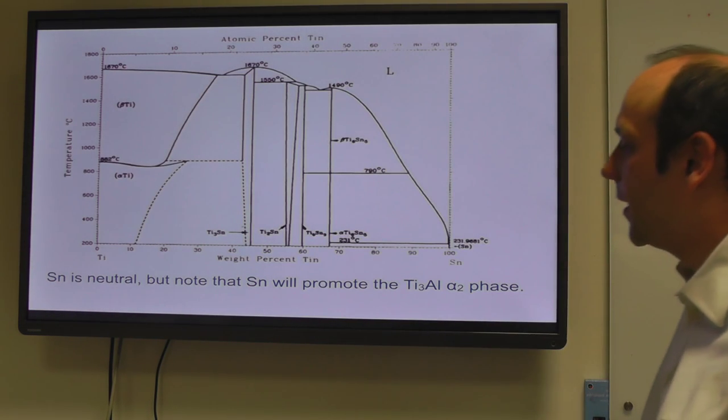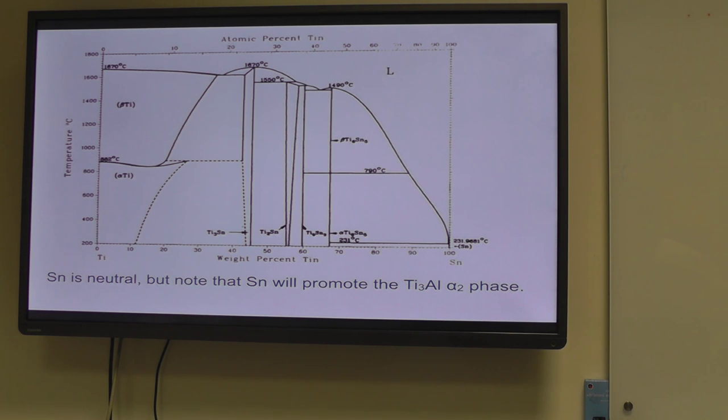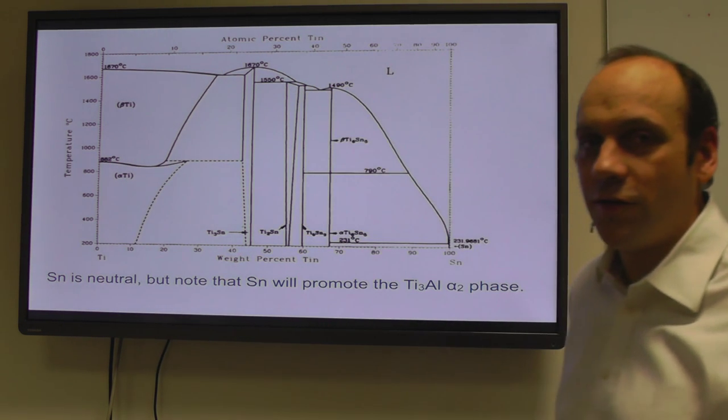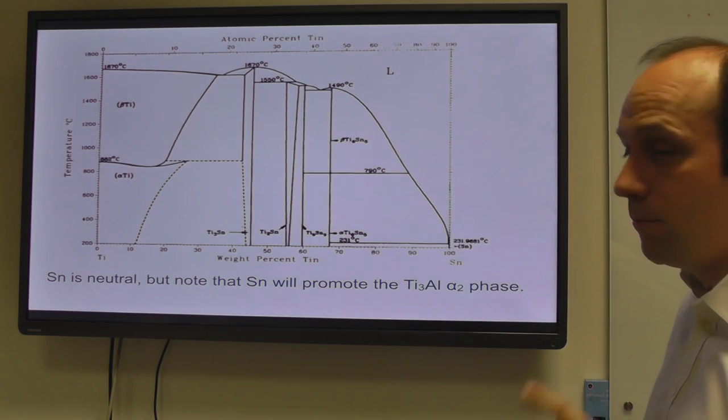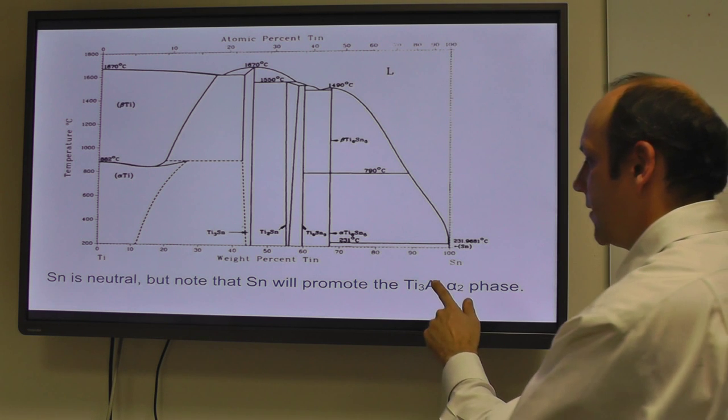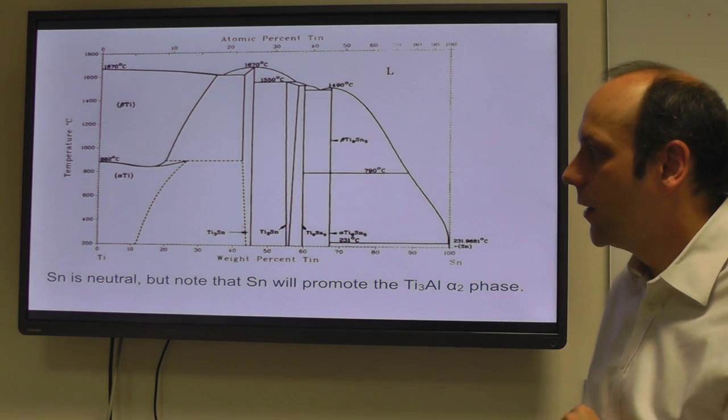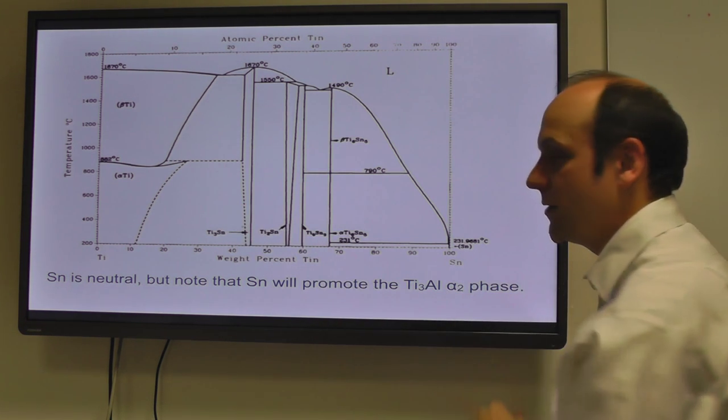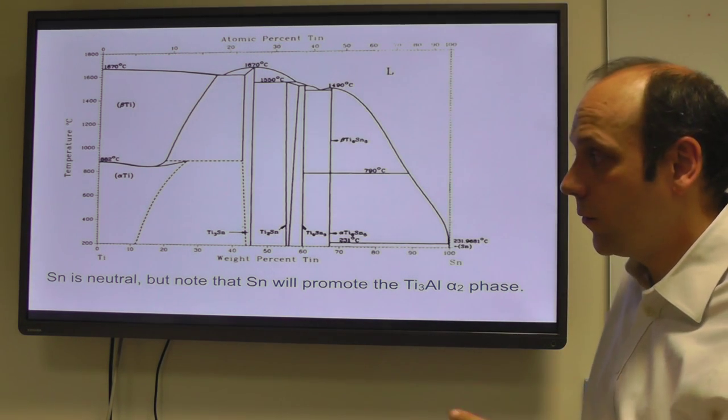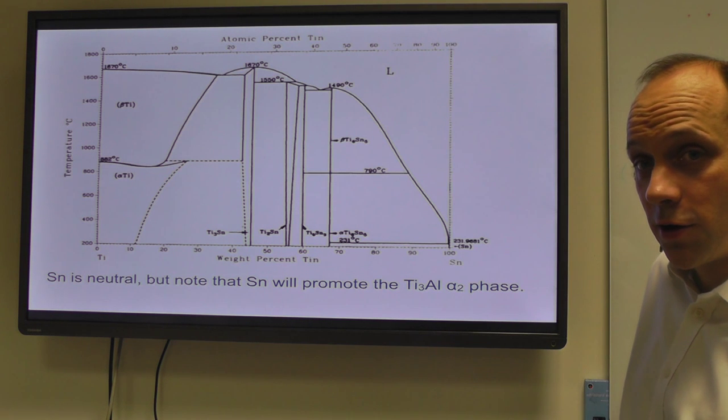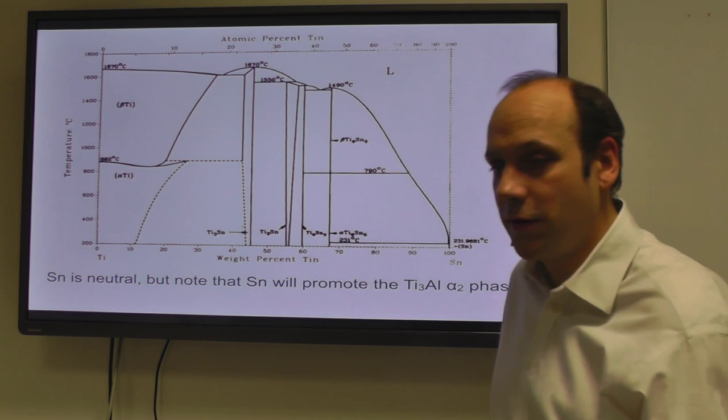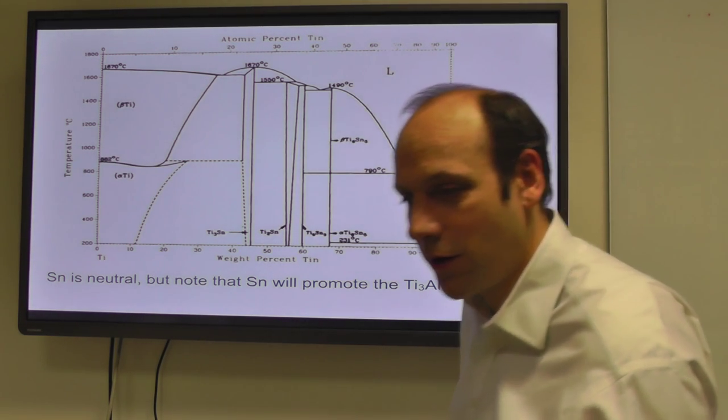Another example here is tin. We said that tin was neutral earlier. That is, it has no effect at small alloying contents on the solvus temperature, the transformation temperature from beta to alpha. But notice that there is a Ti3Sn phase. Tin will tend to go on the aluminum side of the alpha-2 phase. It has the same crystal structure Ti3Sn as Ti3Al. So tin will tend to be a promoter of alpha-2 along with aluminum. We use tin quite commonly as solution strengthening in titanium alloys. Therefore it's quite important to think about the effect it's having on alpha-2 because we're going to spend a while thinking about that in a moment.